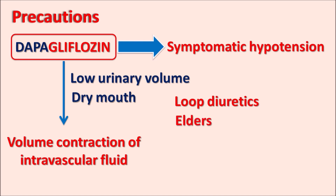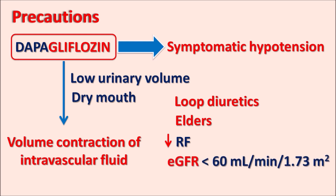Similarly, in elderly patients over 65 years of age, there may be increased volume depletion with Dapagliflozin. In patients with decreased renal function — where the estimated glomerular filtration rate (eGFR) is less than 60 mL/min/1.73 m² of body surface area — Dapagliflozin may increase symptomatic hypotension. In renally impaired patients, this drug should be avoided.